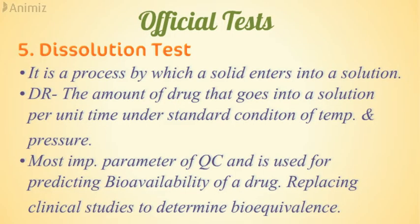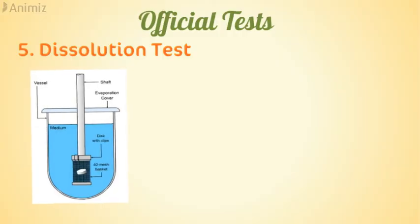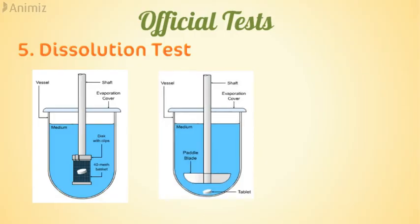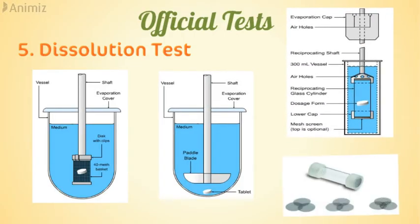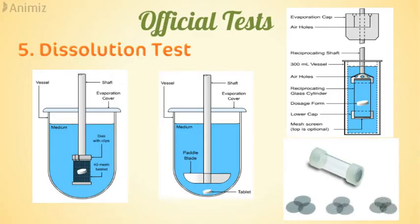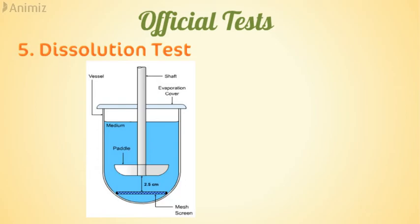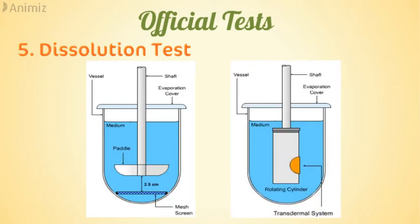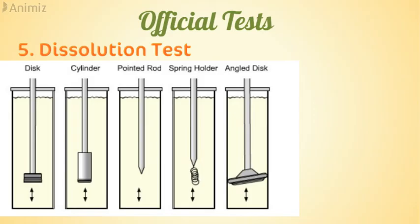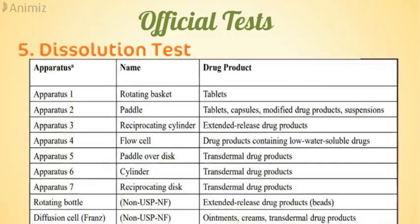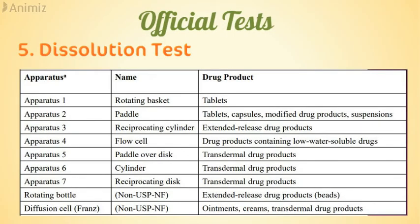Different dissolution apparatuses include USP Apparatus 1 (rotating basket), USP Apparatus 2 (rotating paddle), and USP Apparatus 3 (reciprocating cylinder). Different dissolution tests are used depending on the dosage form and the physicochemical properties of the drug.